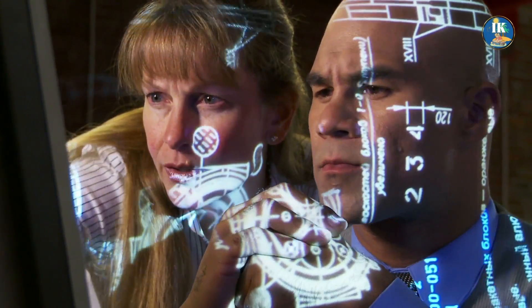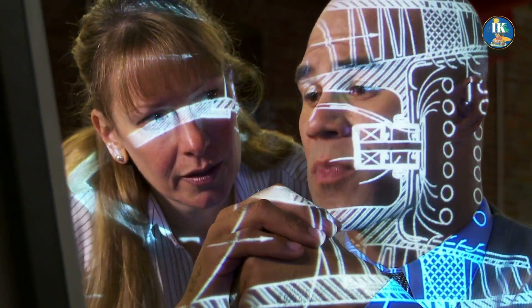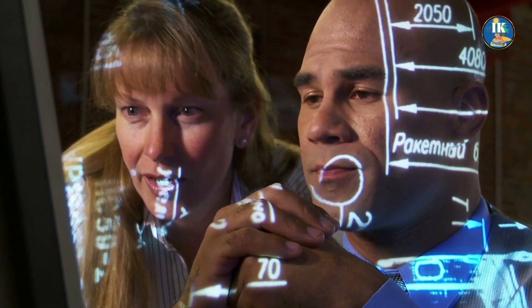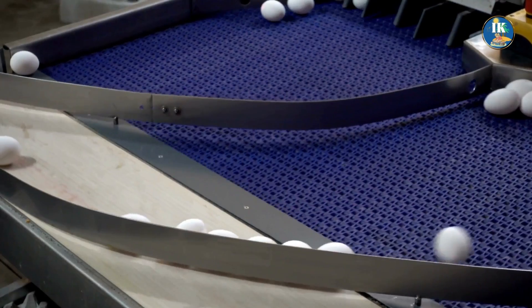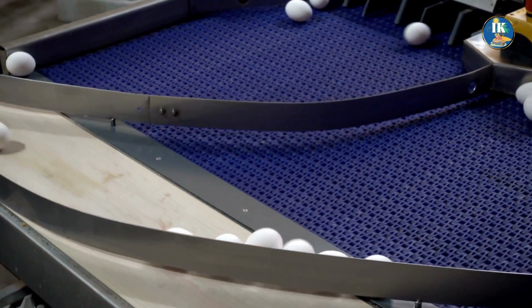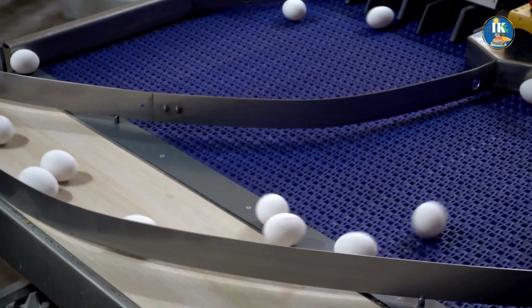The first steps towards this reality came in the form of industrial automation. In the late 19th century, machines were developed that could perform simple tasks like sorting and counting, freeing up human workers to focus on more complex tasks.